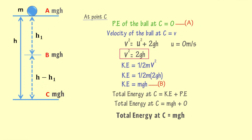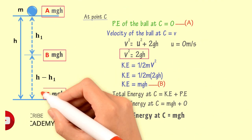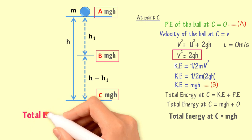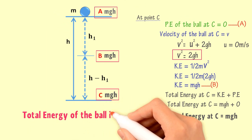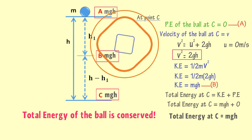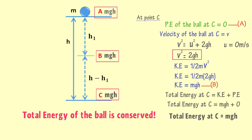Thus, the total energy at A is MGH, at B is MGH, and at C is also MGH. The total energy of the ball at each and every point is MGH — or we can say, the total energy of the ball is conserved. I hope you have learned the concept of the law of conservation of energy. Thank you very much for watching this video.